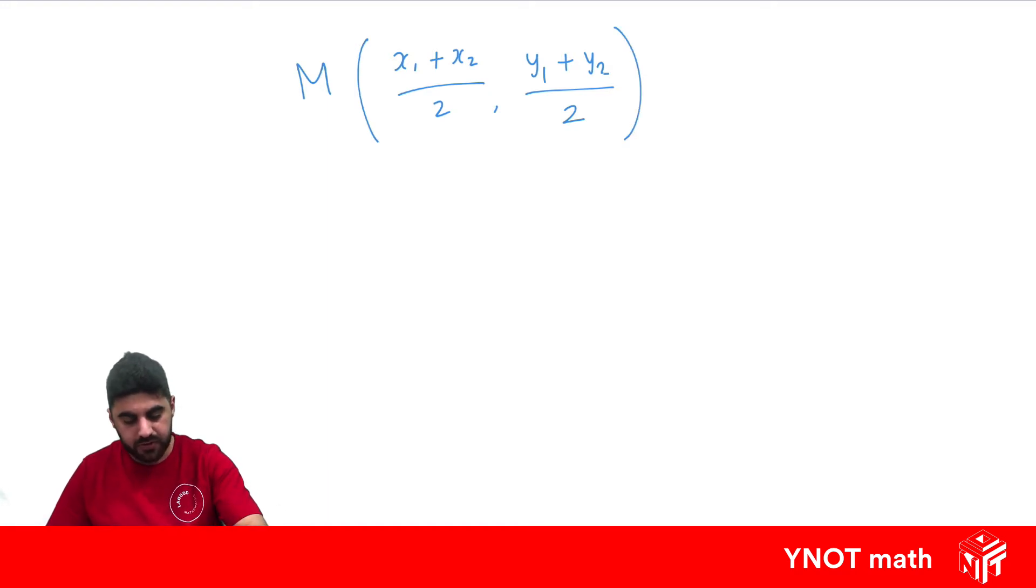We're given two points, x1, y1, and another point, x2, y2. So let's find the midpoint between (-4, -2) and (3, -8).